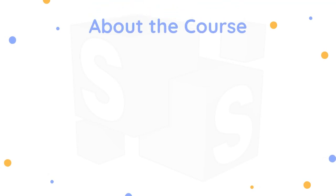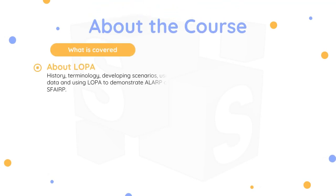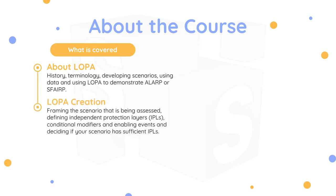The course covers the history of LOPA, the terminology used in the method, how scenarios are developed, how data is used, and how the method is used to demonstrate a LARP or SFARP. Topics include framing the scenario being assessed, defining independent protection layers, conditional modifiers and enabling events, and deciding if your scenario has sufficient IPLs.